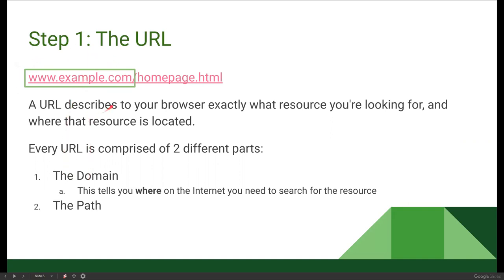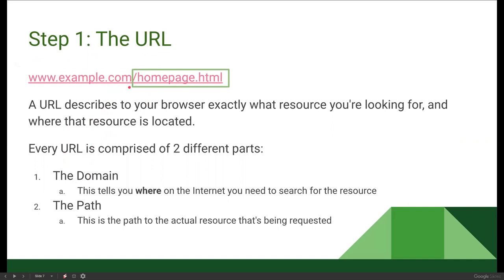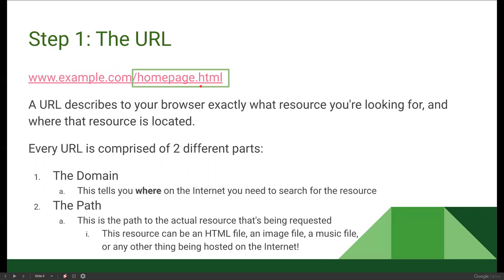Part two is the path. After that forward slash, this is the path to the actual resource being requested. Sometimes it'll just be an HTML file, but this resource can be HTML, a music file, an image file — it can be anything posted on the internet. Your path can be as long as you need it to be, as you could be navigating through different pages within a website to get to the resource you want.